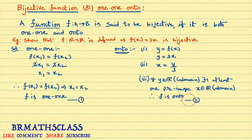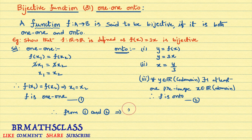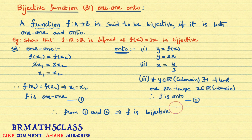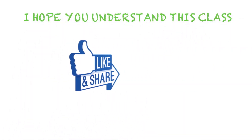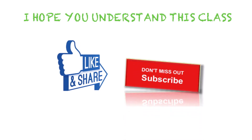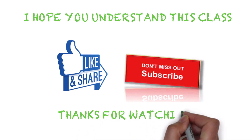From equation 1 (f is 1-1) and equation 2 (f is onto), we can say that the function f is bijective. Bijective function is also known as 1-1 onto. I hope you understand this. We'll practice a few more problems based on 1-1 and onto, and then you'll get more clarity on how to check if a function is bijective or not. If you like this video, please share it with your friends. If you are not yet subscribed to my YouTube channel, subscribe now. Thanks for watching. Have a great day. Bye bye.